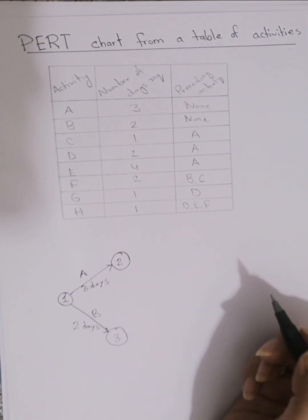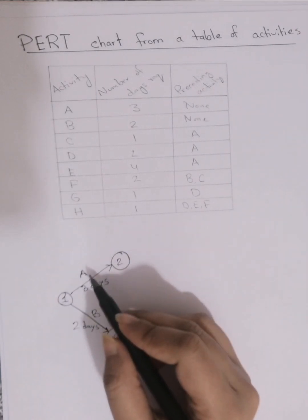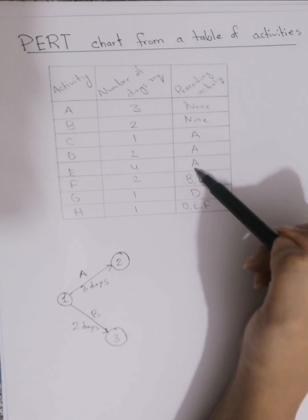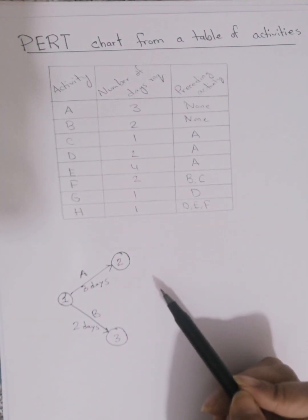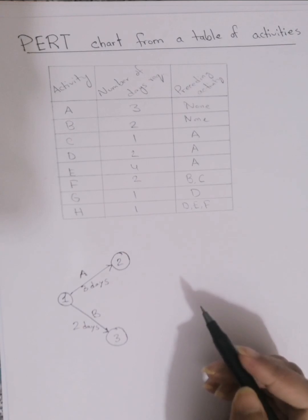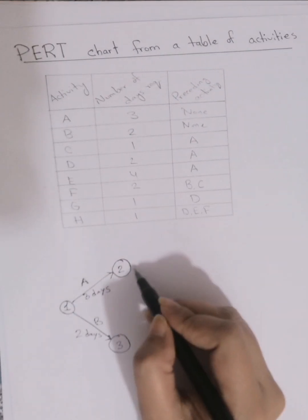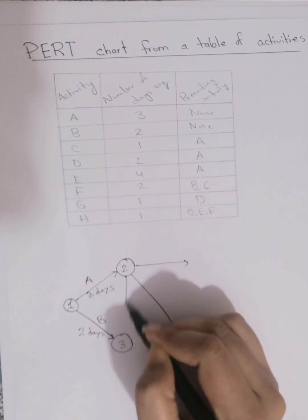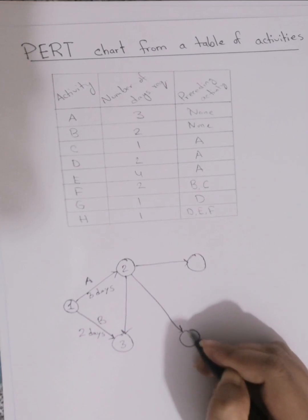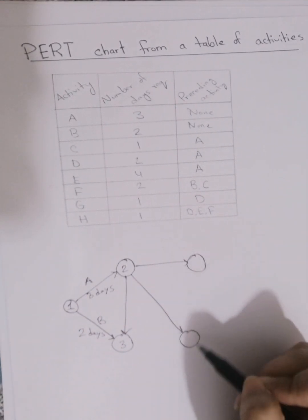Next, we observe that tasks C, D, and E have activity A as a prerequisite. So we will create three arrows representing these three activities from node 2. Again, we will have three ending nodes.